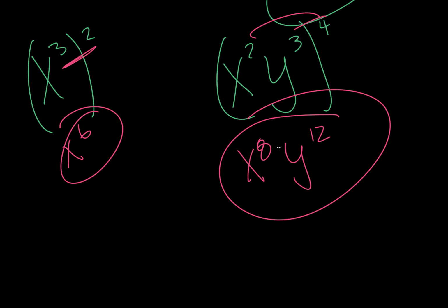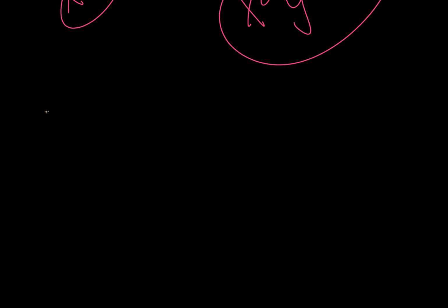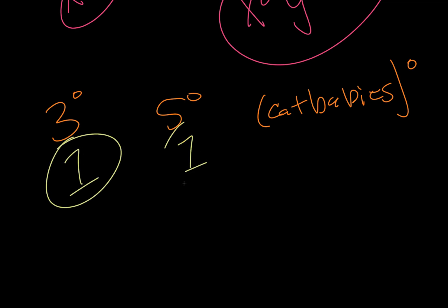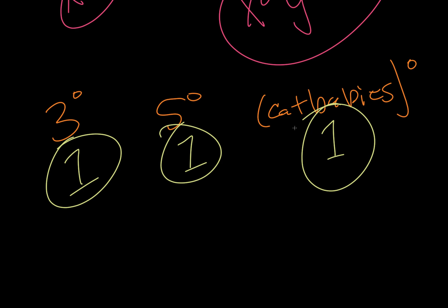And we'll keep moving on. So we have 3 to the 0, 5 to the 0, and cat babies raised to the 0. Now the rule we're using is anything raised to the 0 is 1. So that means that that's 1, that's 1, and that's also 1. So it doesn't matter what it is. Anything that's raised to the 0 is 1.